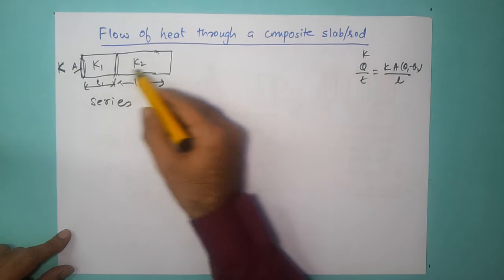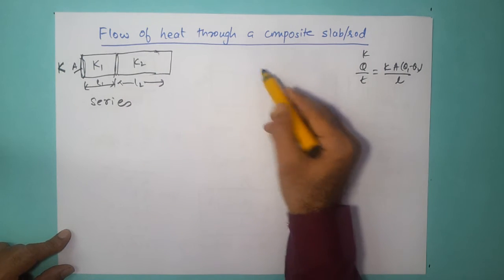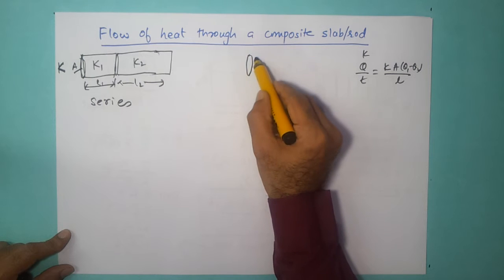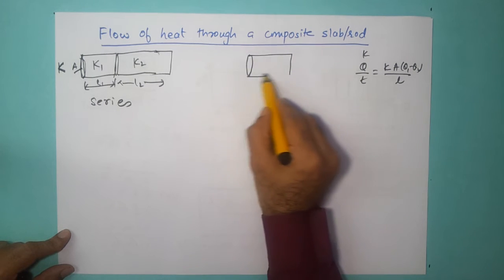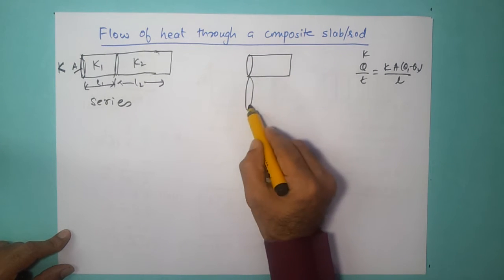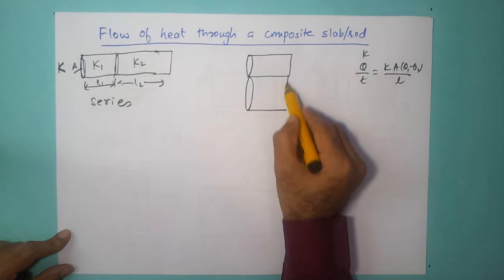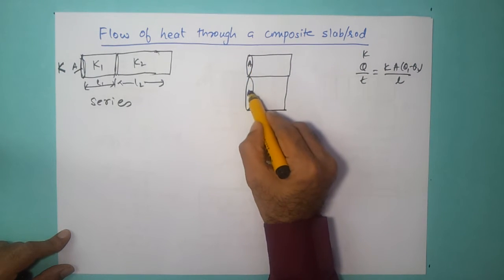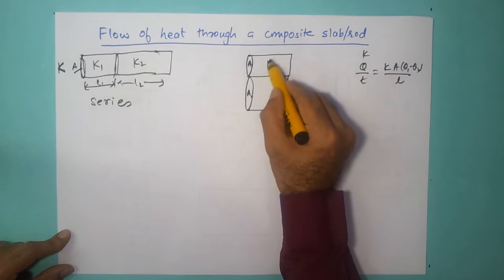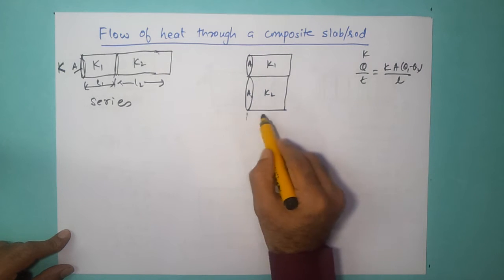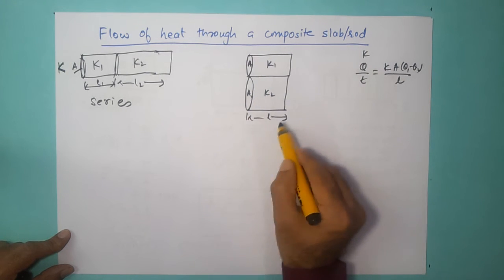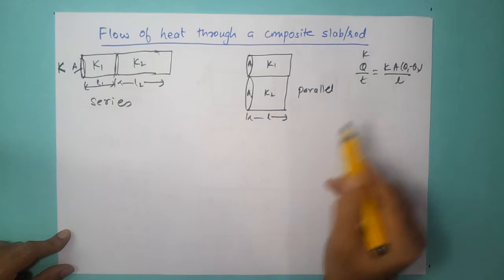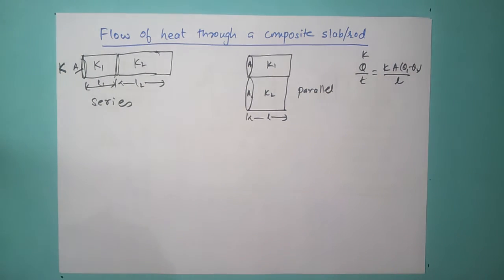There is also a possibility that the two rods are connected in parallel. For example, rod one and rod two are side by side, with cross-sectional areas A1 and A2, thermal conductivities K1 and K2, and the same length L. This is a parallel connection.